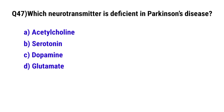Question number 47: Which neurotransmitter is deficient in Parkinson's disease? The correct option is C: dopamine.